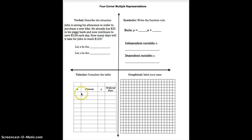Before we can do that, we need to understand what the x variable and the y variable represent in this situation. We're talking about John saving up money, so the y variable is going to be money. He's saving it each day, so day is associated with the x variable. The total amount of money depends on the day that has gone by, so we're going to let x represent the day and y represent the total amount of money that John will save up.